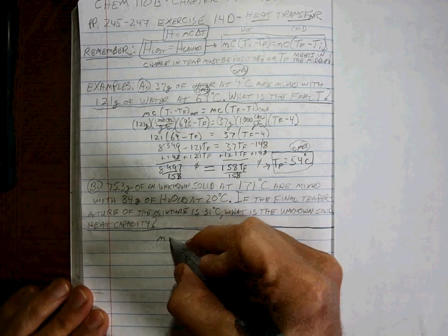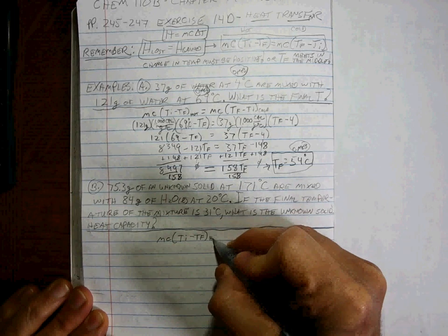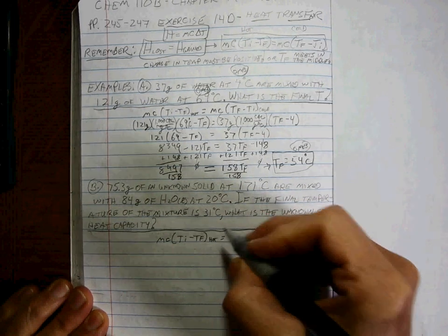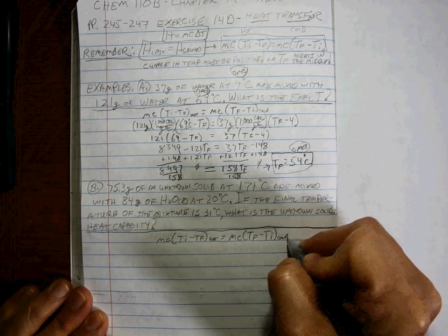Well, we have something hot and something cold added together. So it's MC T initial minus T final again of the hot, because that's the lost, and MC T final minus T initial of the cold.